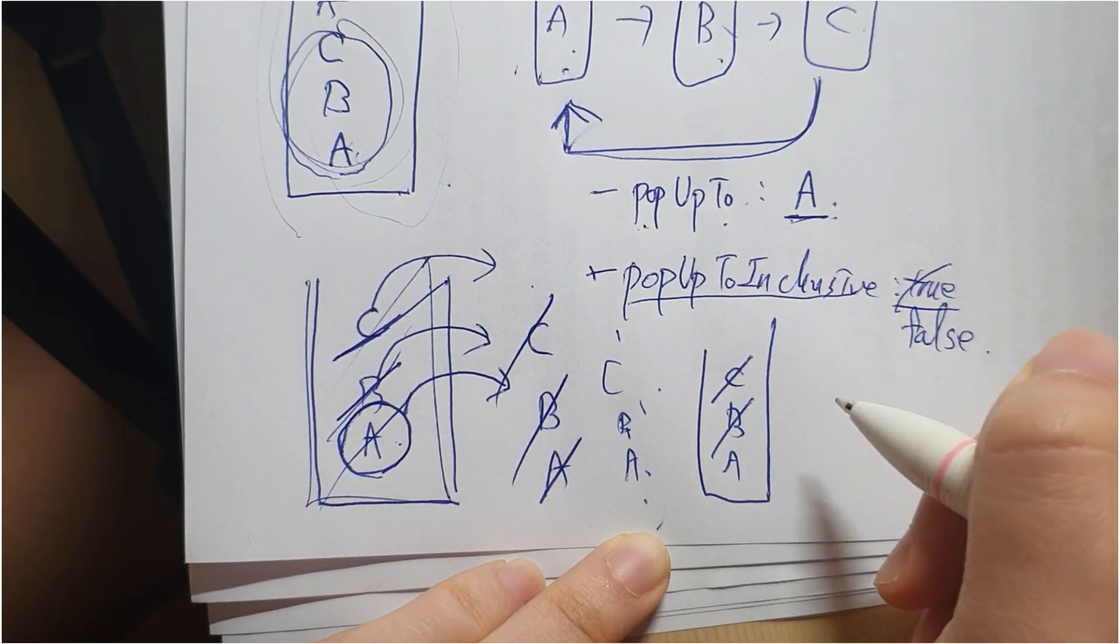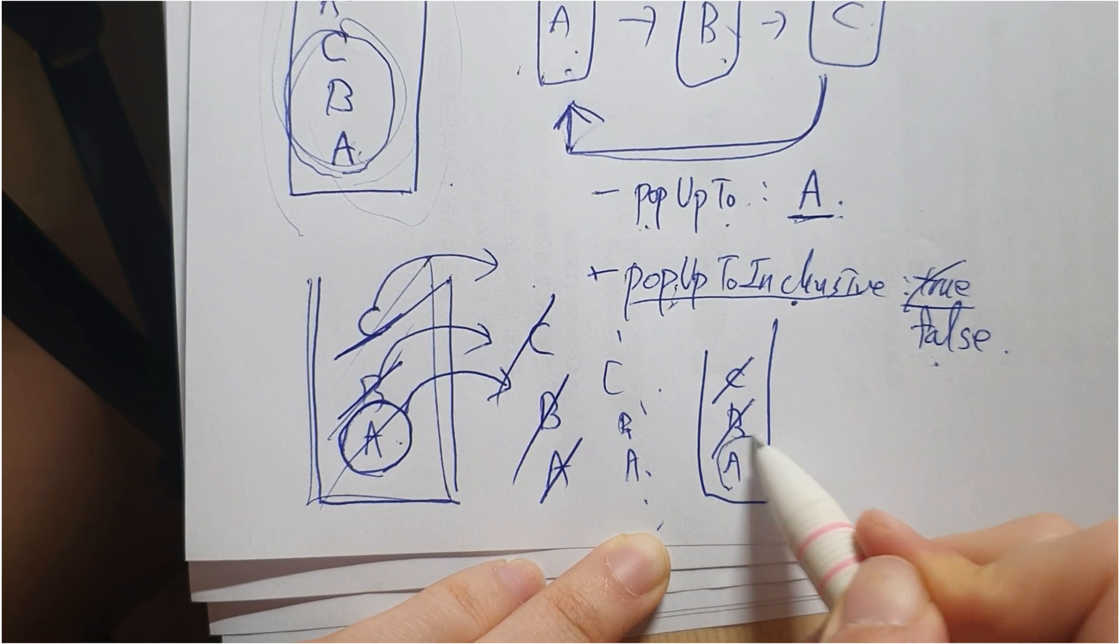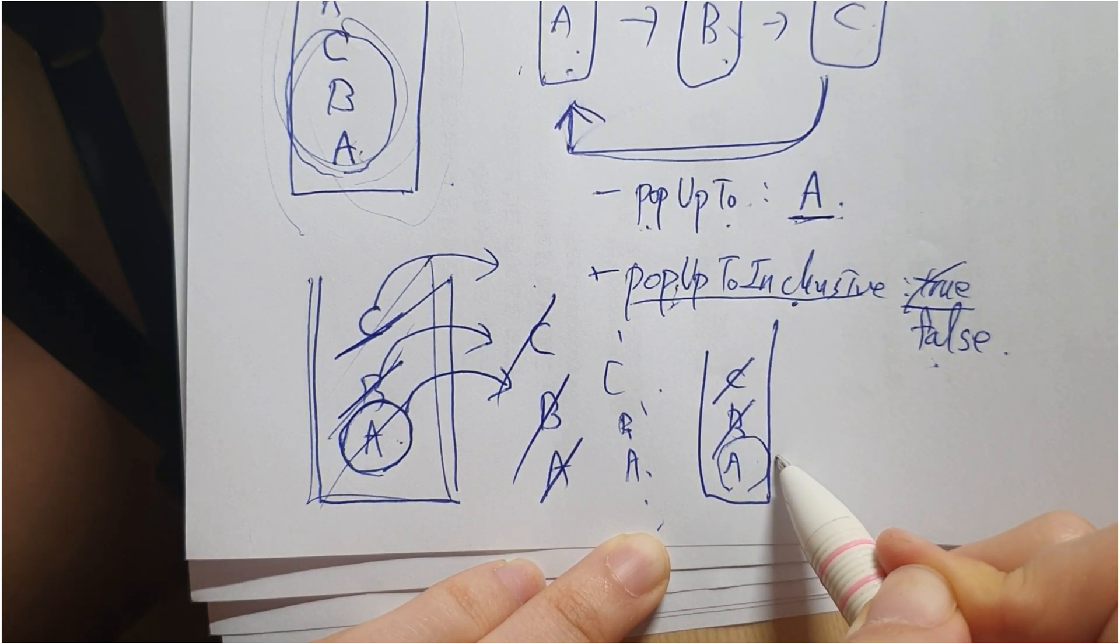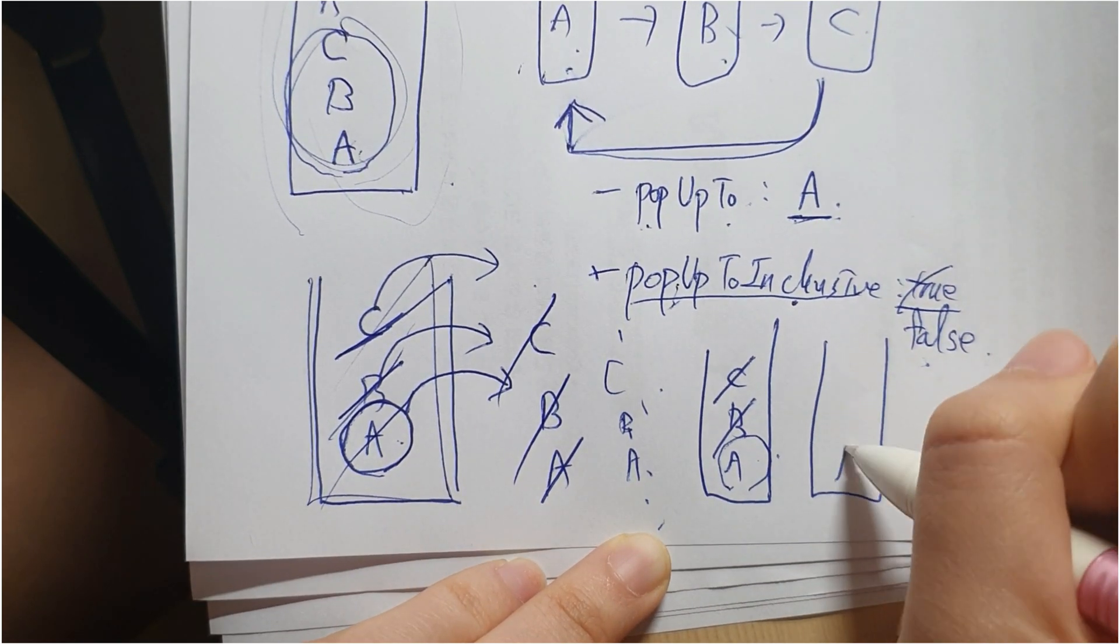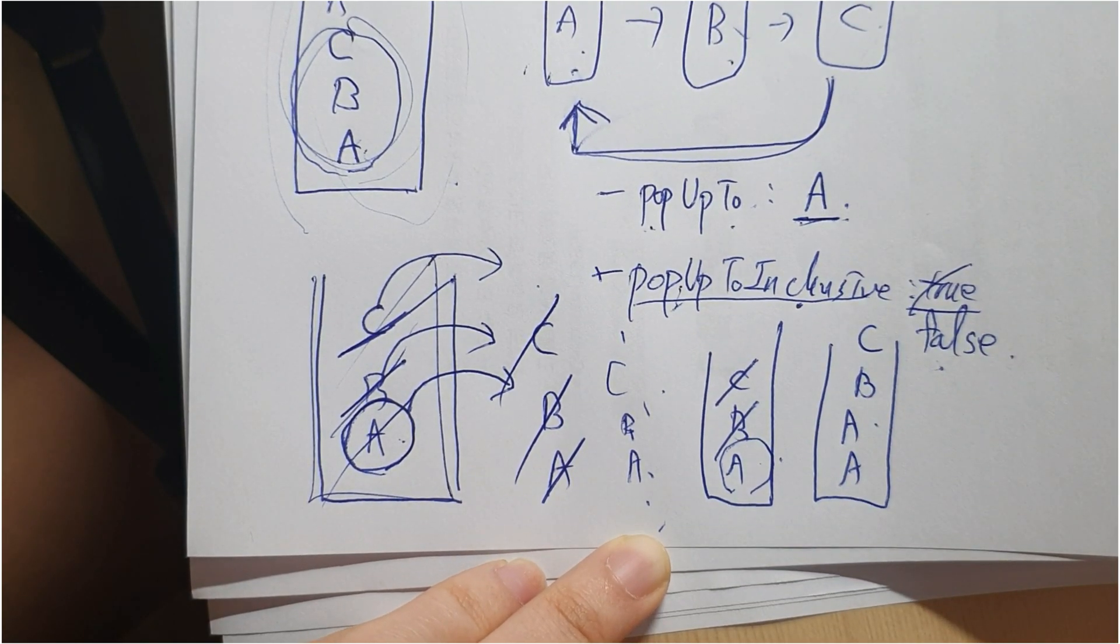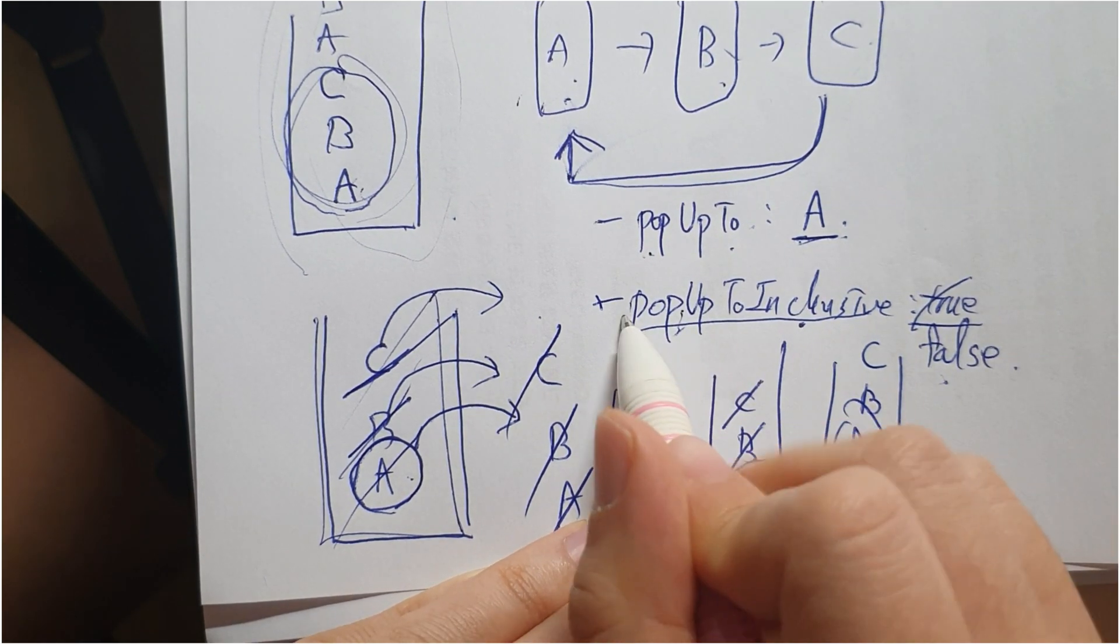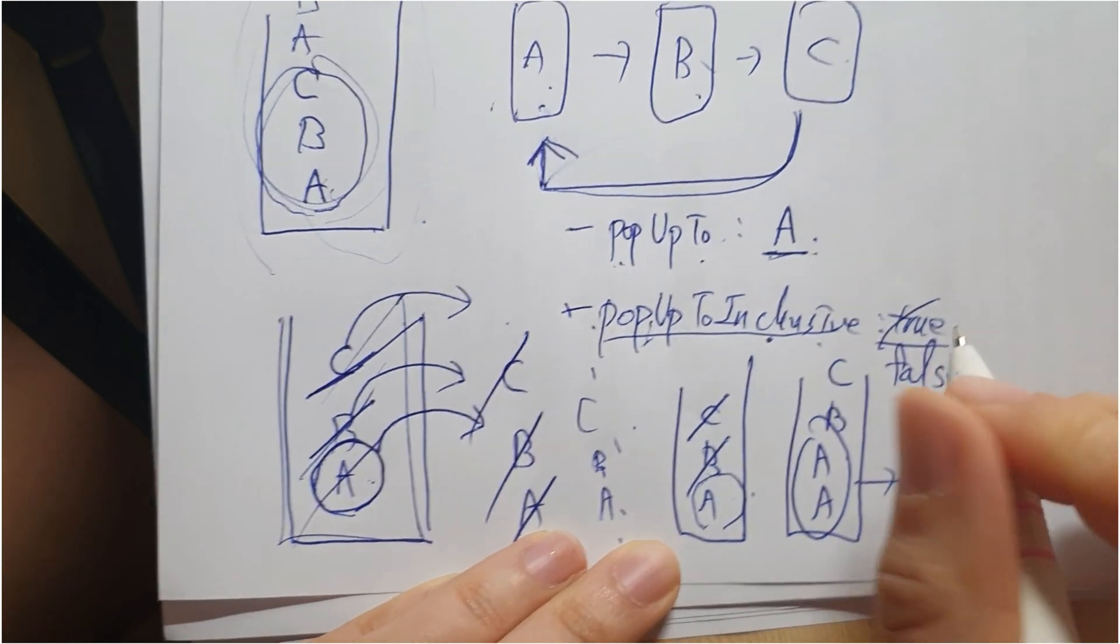But pop up to inclusive is false, so I'm not going to remove A. So it's going to be stacked like this. So we have two instances of A because we didn't pop up to inclusively.